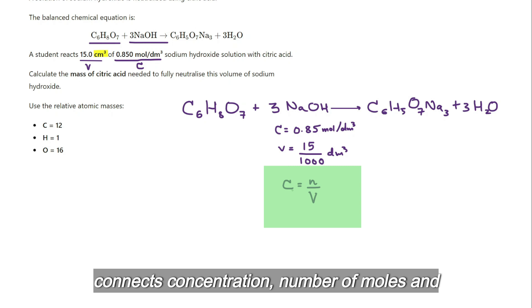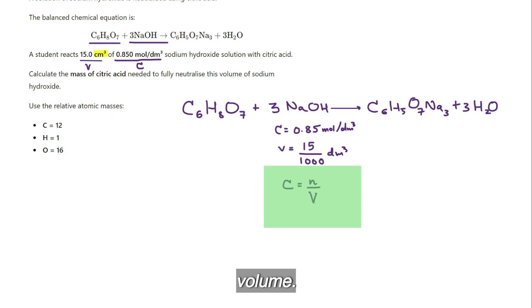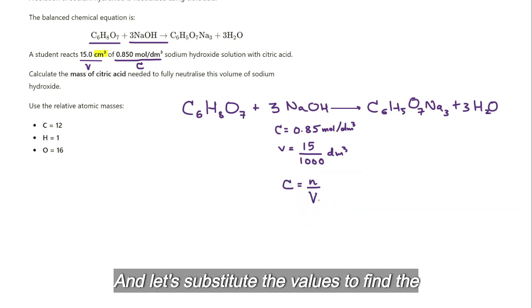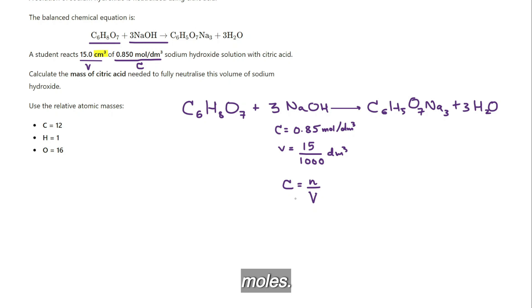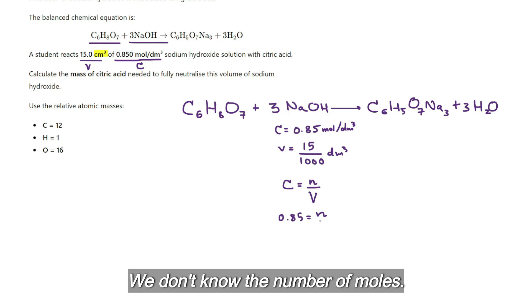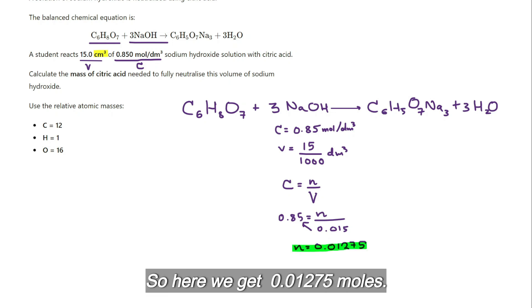Now here's the formula that connects concentration, number of moles, and volume. Let's substitute the values to find the number of moles. So the concentration is 0.85 equals, we don't know the number of moles, but the volume is 0.015. So you can multiply them together to find the number of moles. So here we get 0.01275 moles.